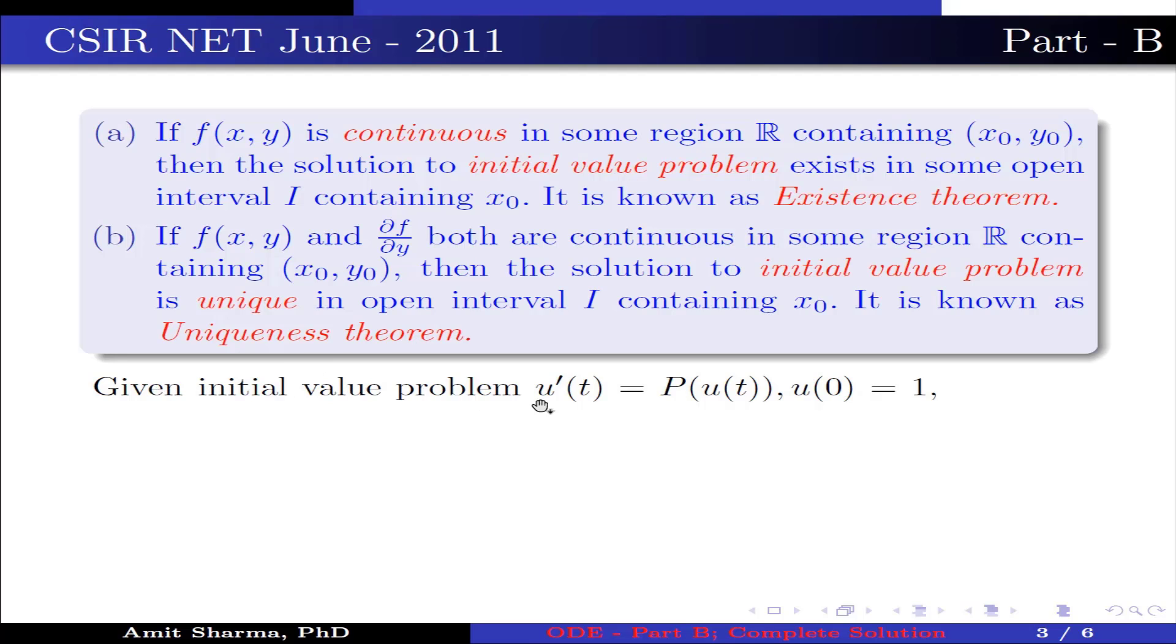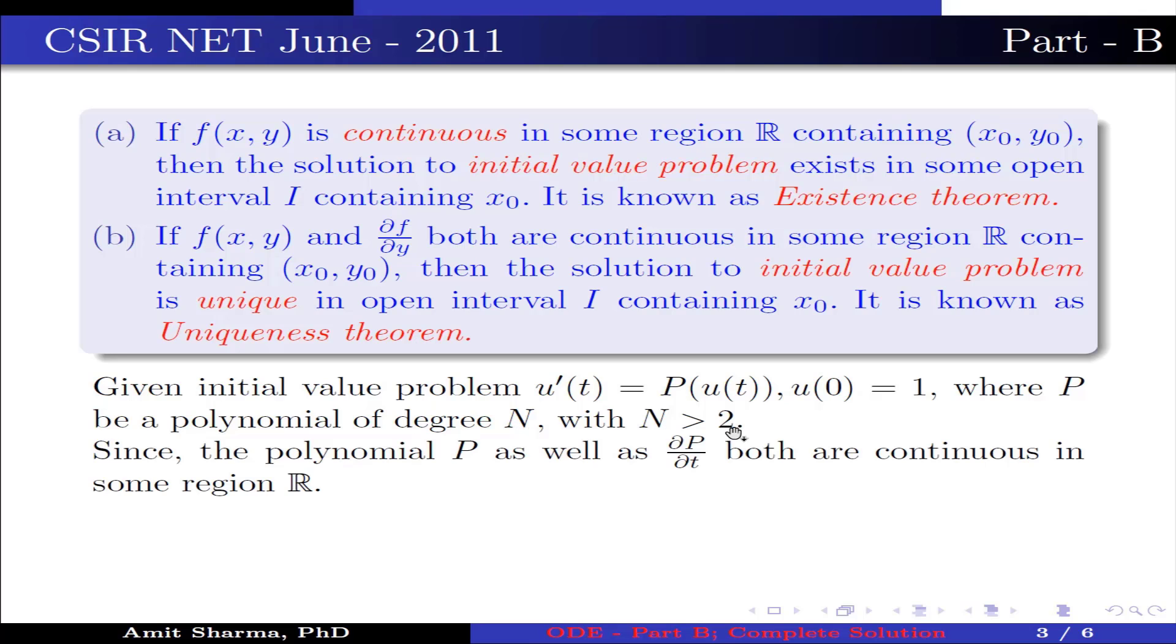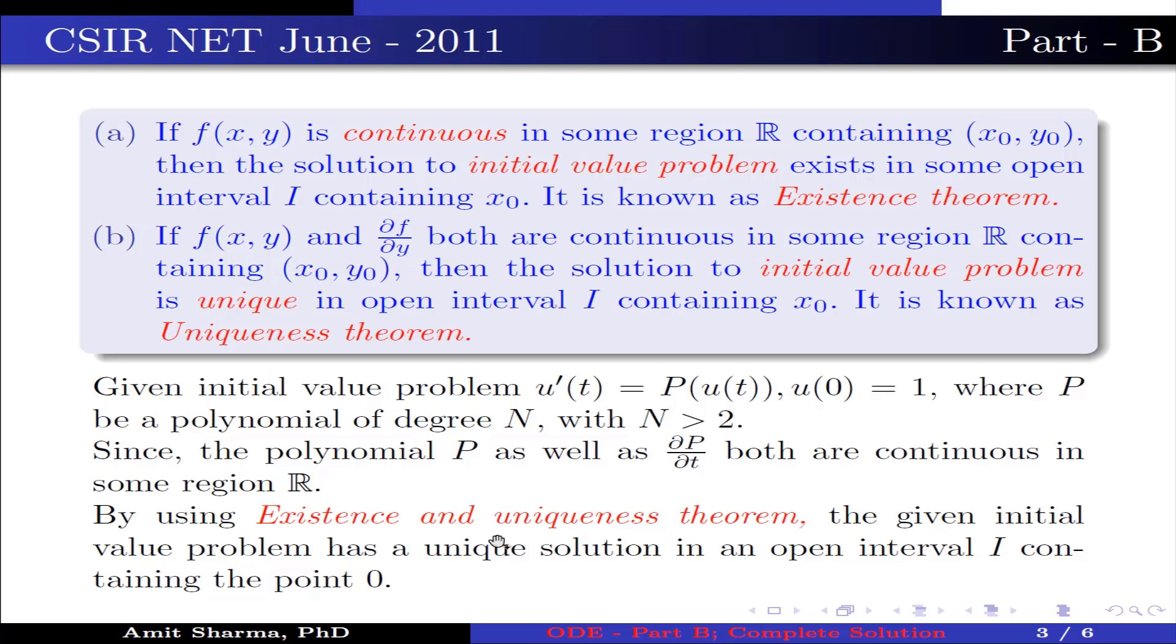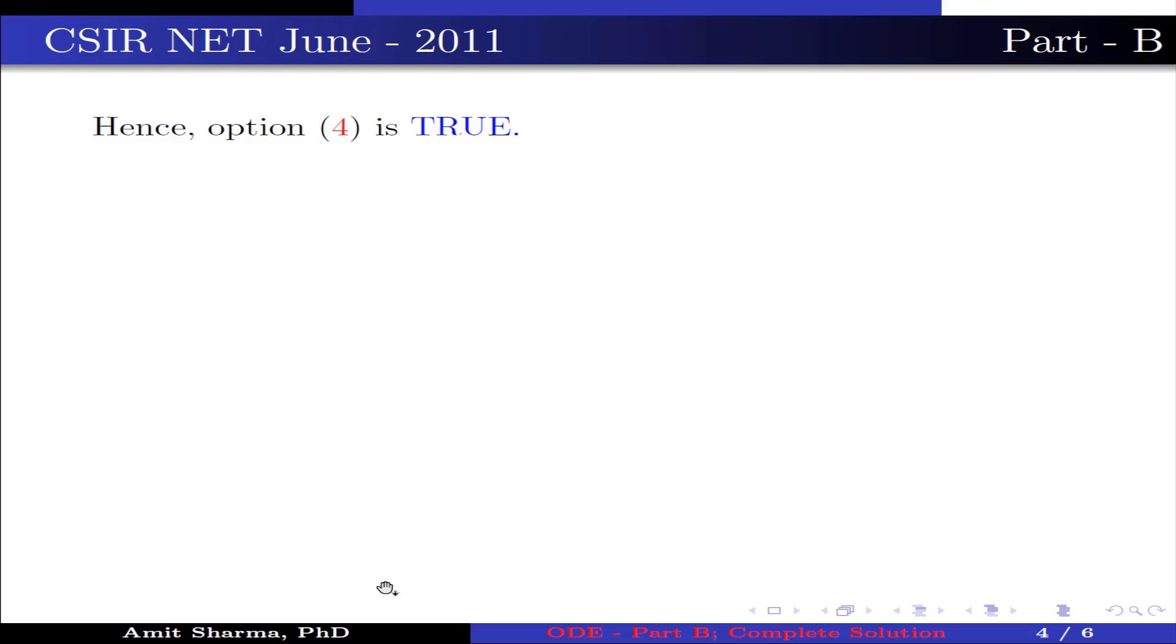Given initial value problem u'(t) equal to P(u) with u(0) equal to 1, where P be a polynomial of degree n with n greater than 2. Since the polynomial P as well as ∂P/∂t both are continuous in some region R, then by using existence and uniqueness theorem, the given initial value problem has a unique solution in an open interval I containing the point 0, hence option 4 is true.